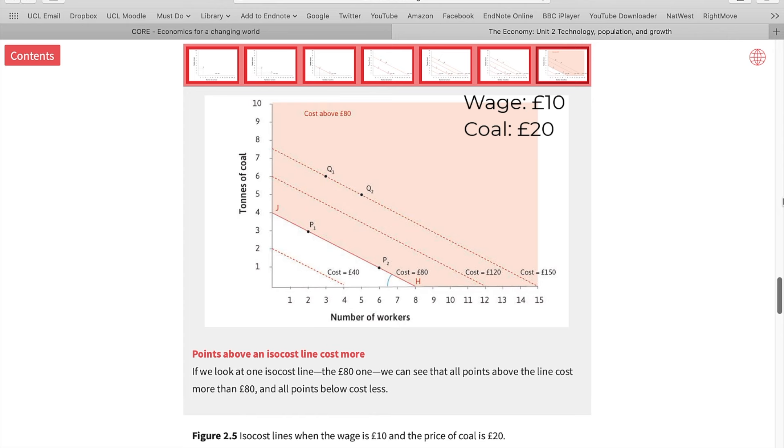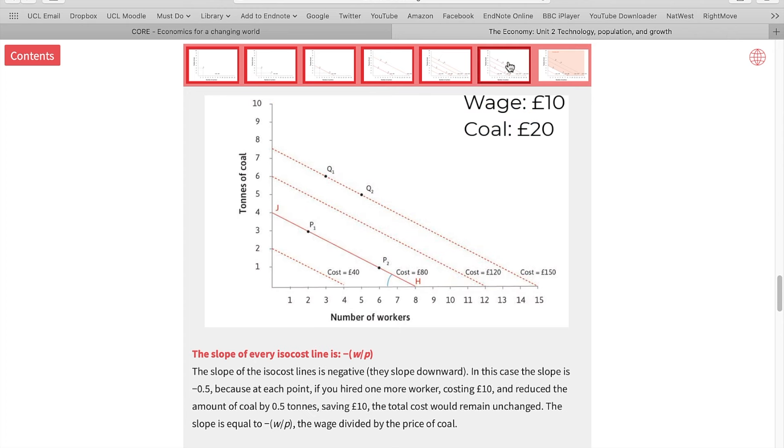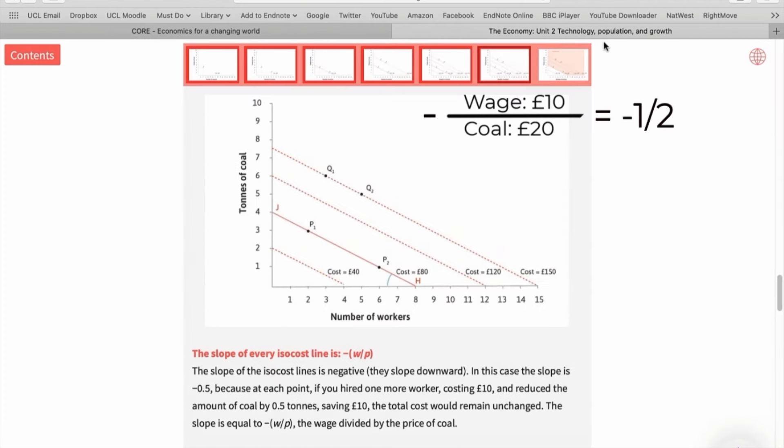Now, let me add one final thing. The slope of these curves are the same, and that is the price of labor over the price of coal. That is wage, 10 pounds, over the price of coal, 20 pounds per ton. That is 1 over 2. We express it in minus terms because the slope of the curves are downward.